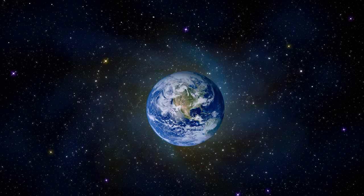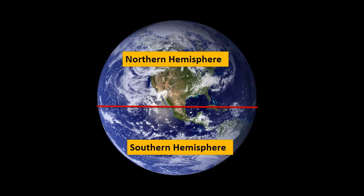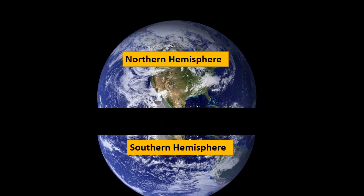It is much easier to view the galaxy from the Northern Hemisphere compared to the Southern Hemisphere, where stars are less bright and block the view. Additionally, four of the five world oceans are located in the Northern Hemisphere: the Pacific, Arctic, Indian, and Atlantic Ocean. The Southern Ocean is the only ocean located exclusively in the Southern Hemisphere, though the Pacific, Indian, and Atlantic Ocean also extend into the Southern part.